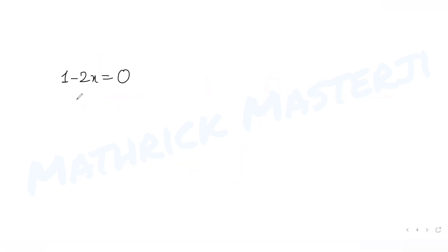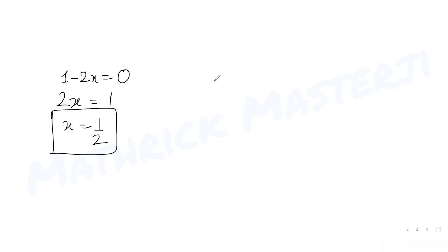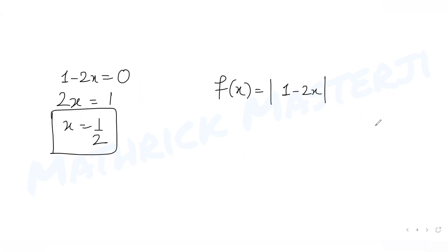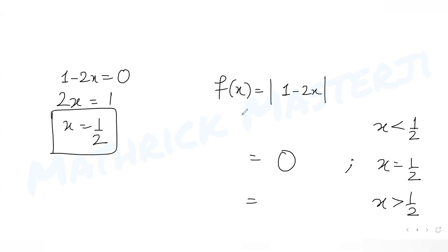To handle mod of (1 minus 2x), let's find where 1 minus 2x equals 0: solving gives x equals 1/2. Let f(x) = mod of (1 minus 2x). The limits go from 0 to 1, so we check signs around x = 1/2.